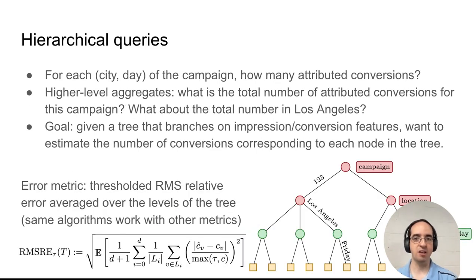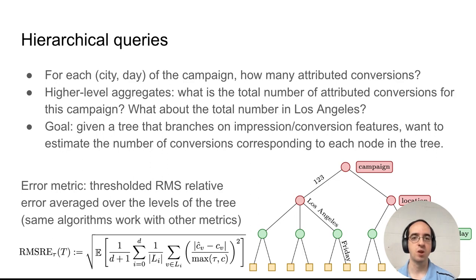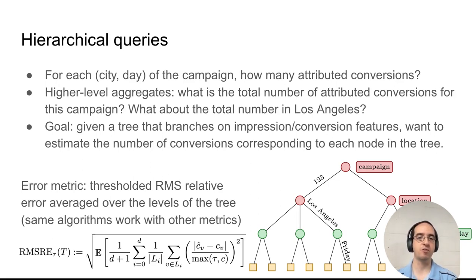More generally, we can ask for each city and day of the campaign how many attributed conversions were there. We can also ask what is the total number of attributed conversions for Campaign 123, or what is the total number in Los Angeles. So given a tree that branches on a combination of impressions and conversion features, we want to estimate the total number of conversions corresponding to each node in the tree.